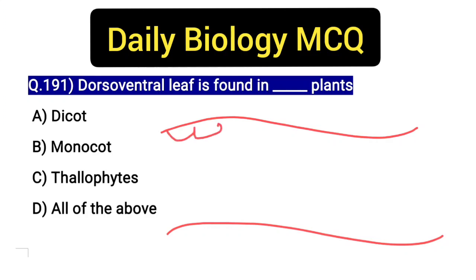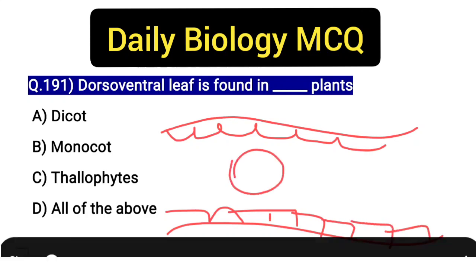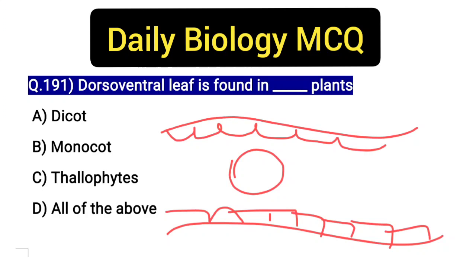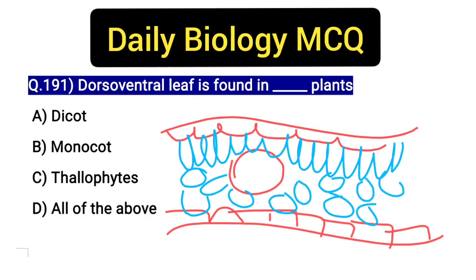The outermost layer is the epidermis, present on the outer layer. Inside, there is a vascular bundle. On the upper surface there are elongated cells which we call palisade cells, and on the other side there are rounded cells which we call spongy mesophyll cells.